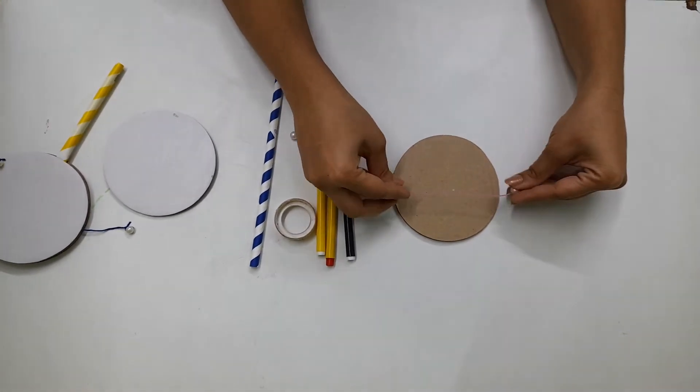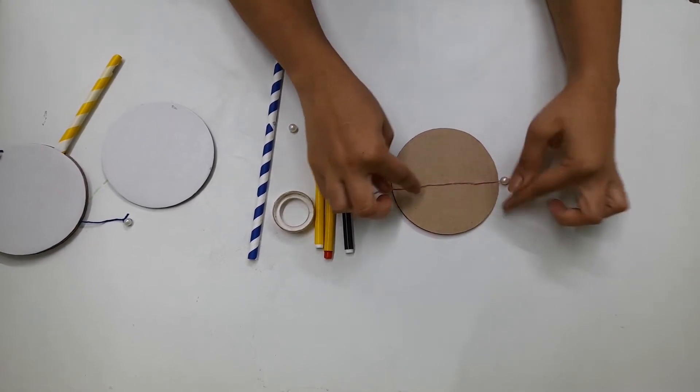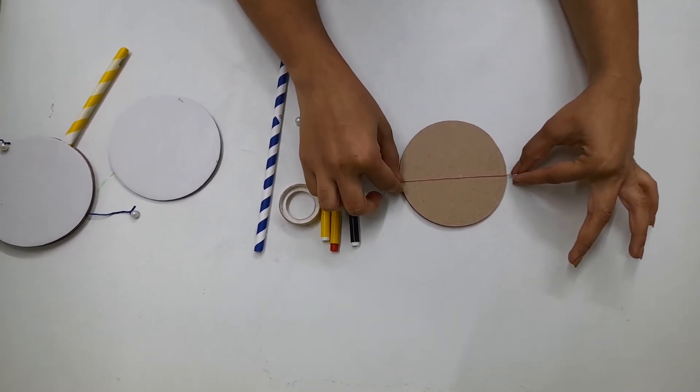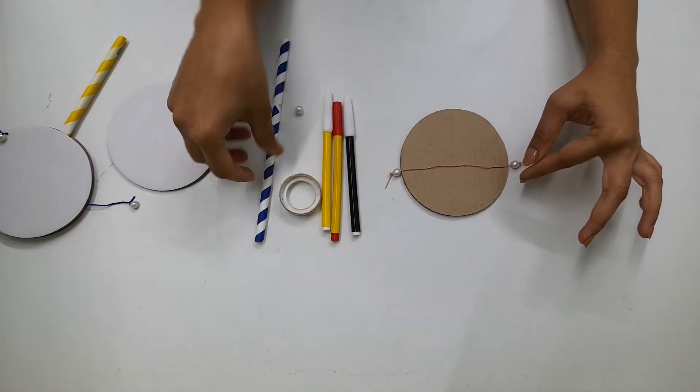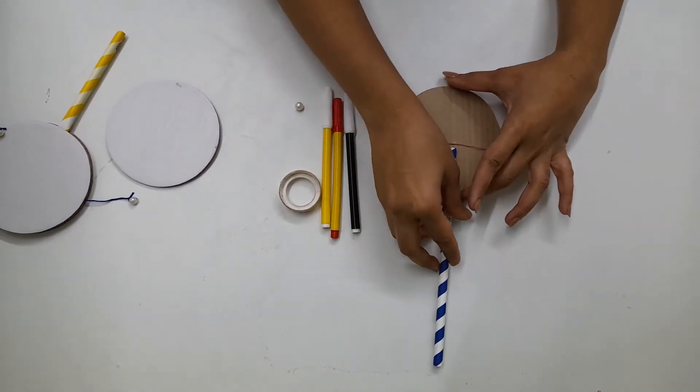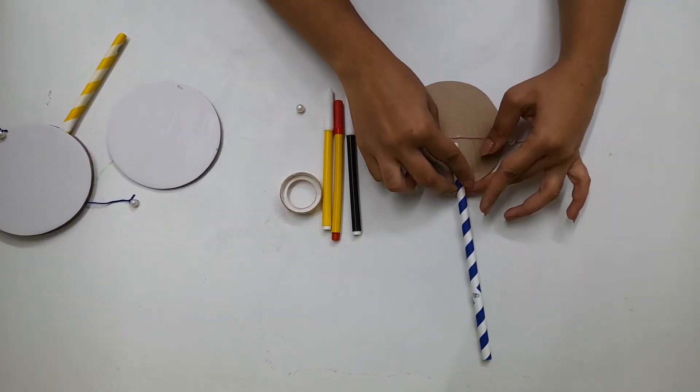Now on the back side of any one of the cardboard pieces, paste this thread somewhere in the center and then fix this straw as well.